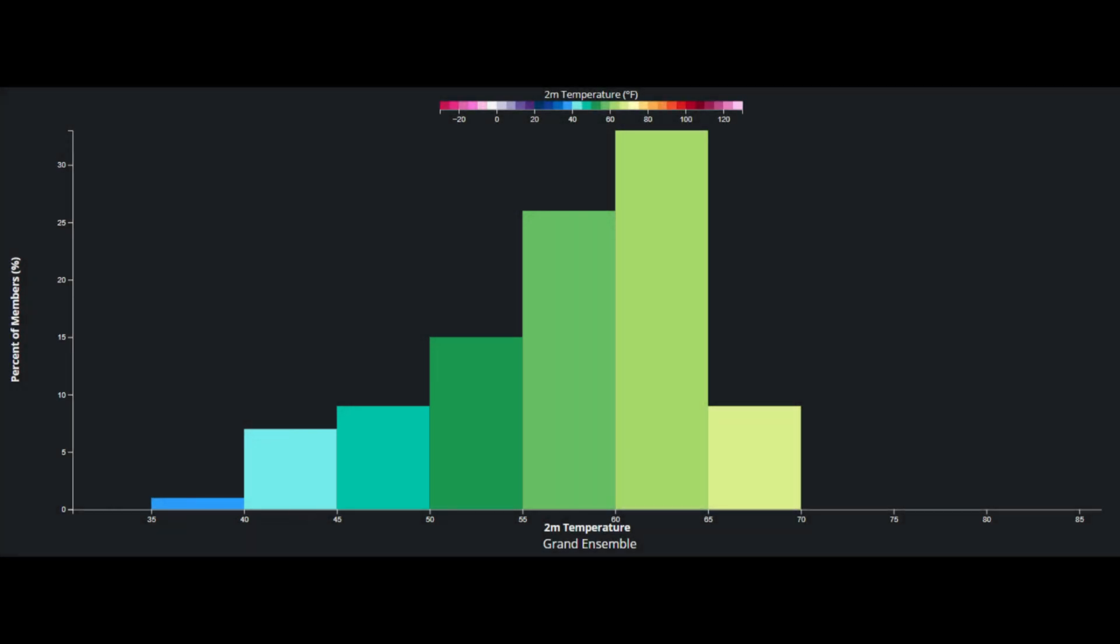Are some members forecasting a faster, colder, more shallow air mass arrival? Is there a possibility that we will see the overall median shift to the left with time to result in colder temperatures than what are currently in the forecast?